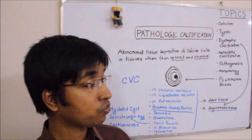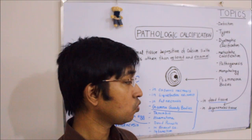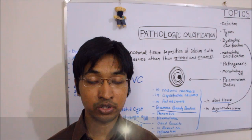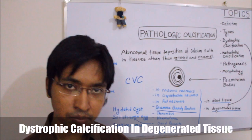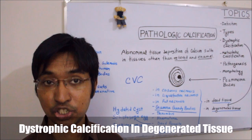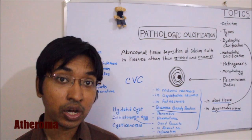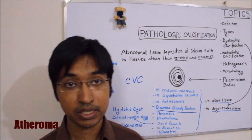These were the examples of dystrophic calcification occurring in dead tissue. Now we will discuss examples of dystrophic calcification occurring in degenerated tissue. One scenario is in dense old scar that has undergone hyalinization — there, dystrophic calcification can follow. Another example is in atheroma. Atheroma are collections of degenerated materials beneath the tunica intima of blood vessels.